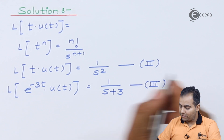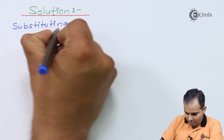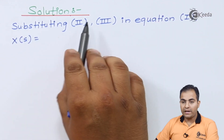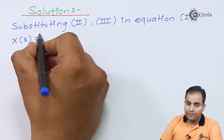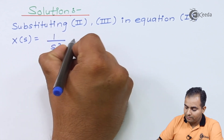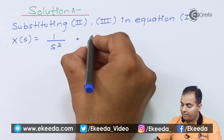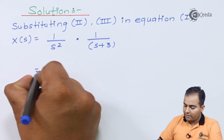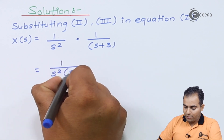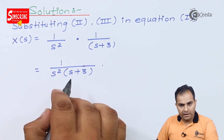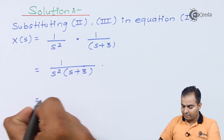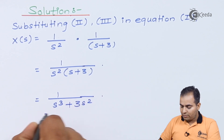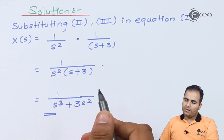Substituting equation 2 and equation 3 into equation 1: X(s) = L{t·u(t)} × L{e^(-3t)·u(t)} = (1/s²) × (1/(s+3)) = 1/(s²(s+3)). You can stop here, or multiply out the denominator to get 1/(s³ + 3s²). Either form is acceptable and you will get full marks.